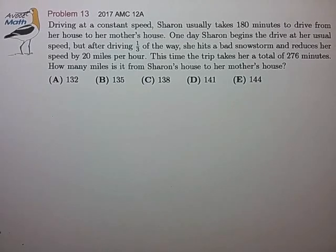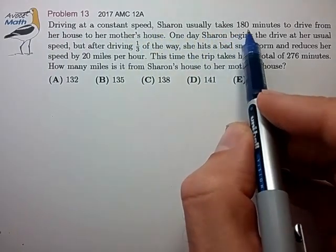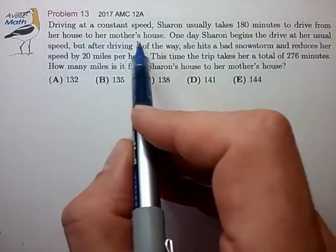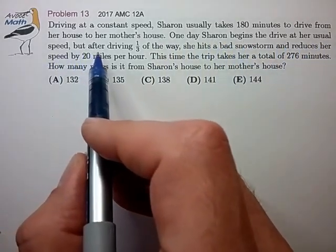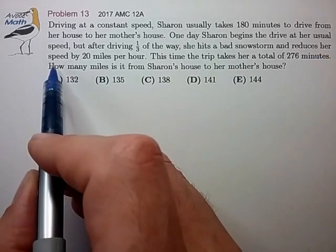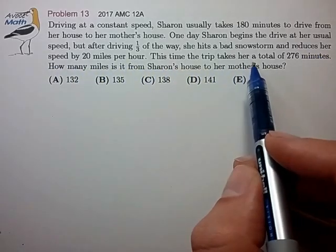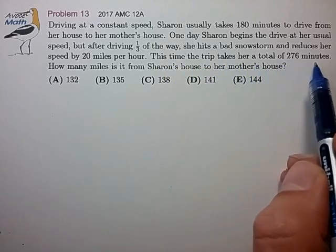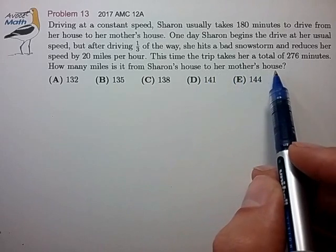Hi, this is problem 13 from the AMC 12A. Driving at constant speed, Sharon usually takes 180 minutes to drive from her house to her mother's house. One day, Sharon begins to drive at her usual speed, but after driving one-third of the way, she hits a bad snowstorm and reduces her speed by 20 miles per hour. This time, the trip takes a total of 276 minutes. How many miles is it from Sharon's house to her mother's house?